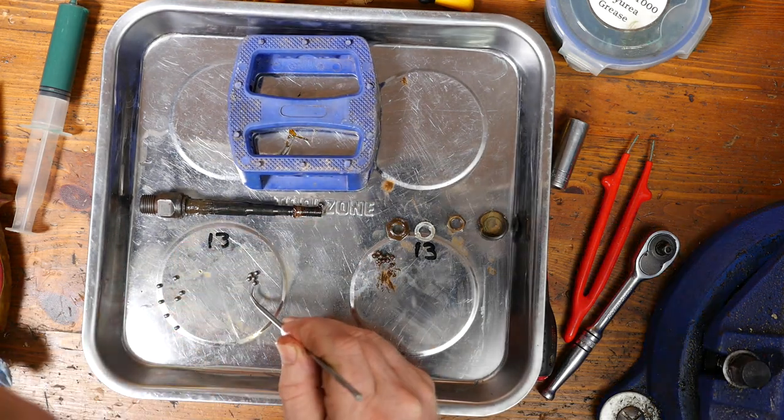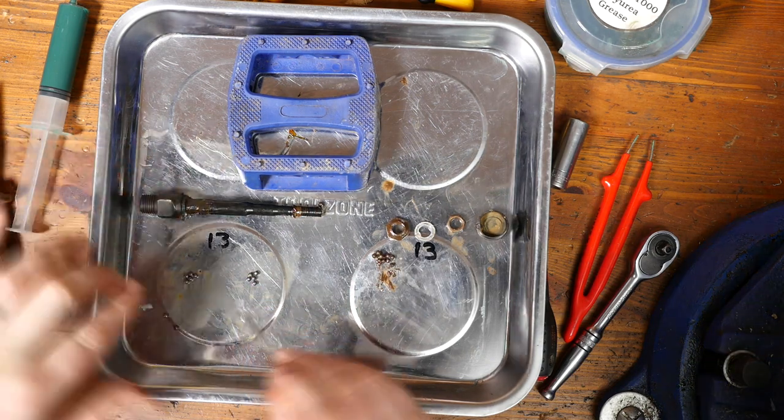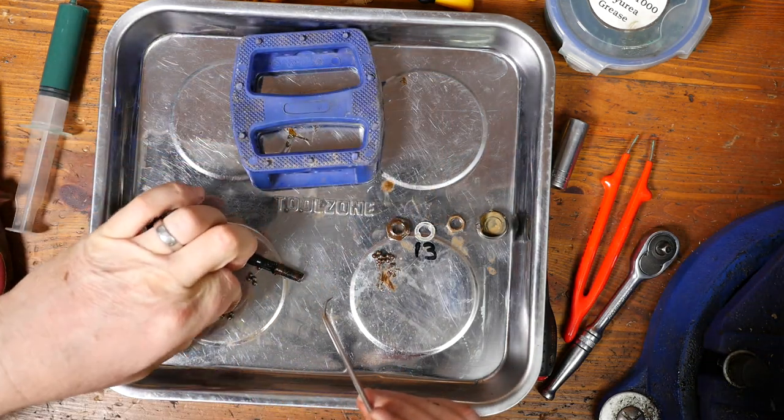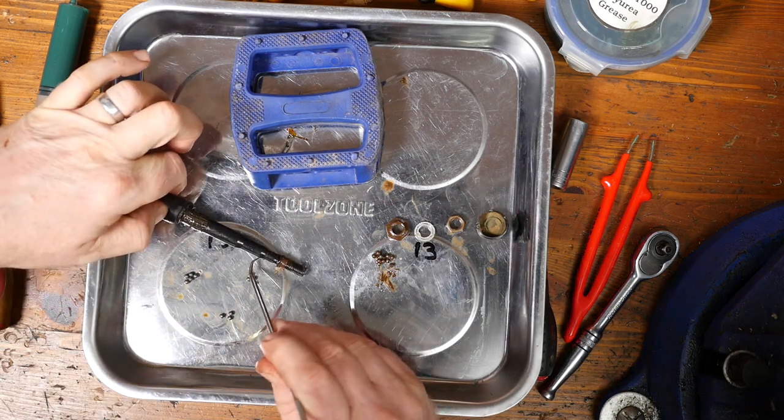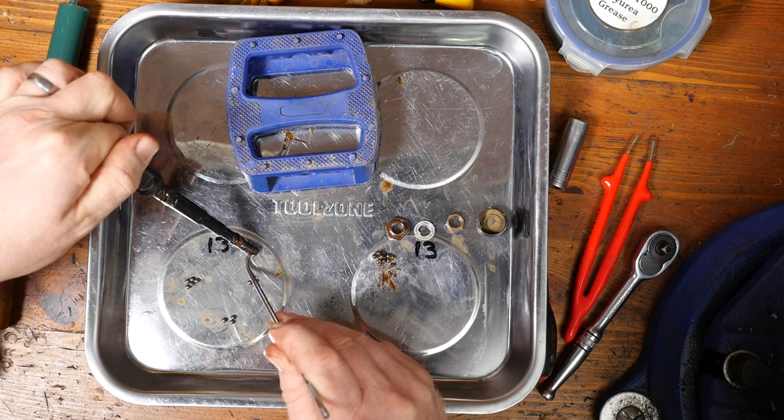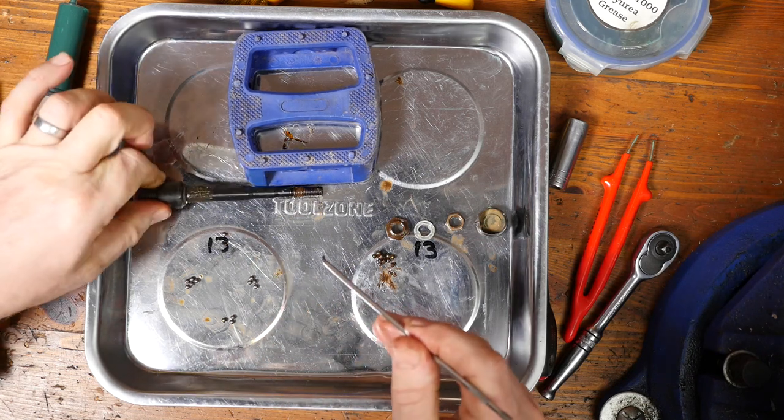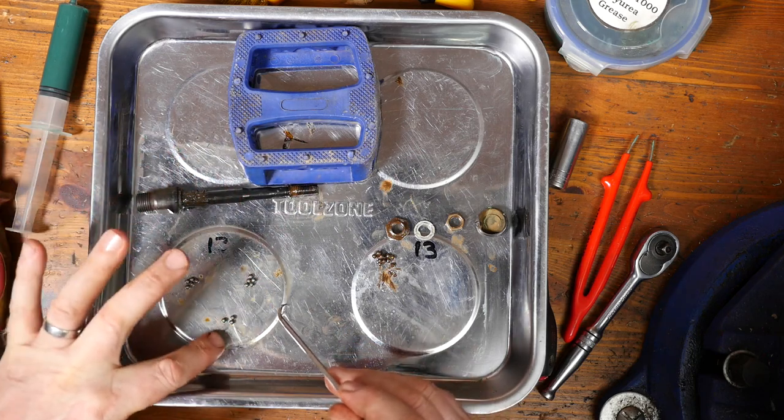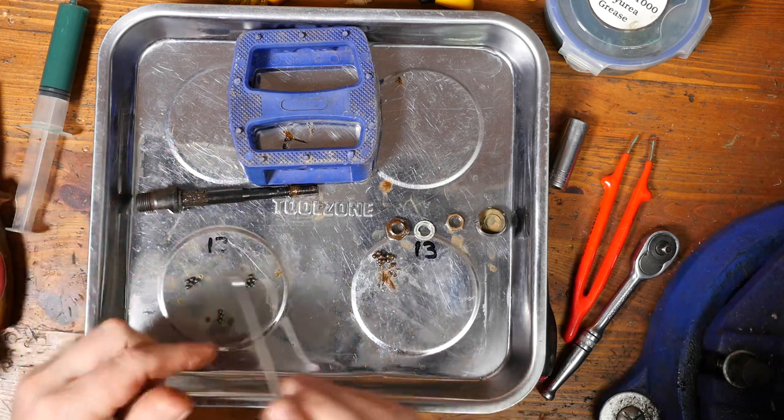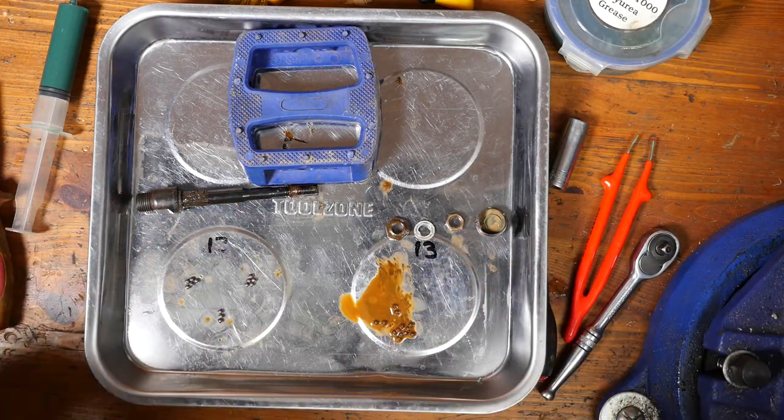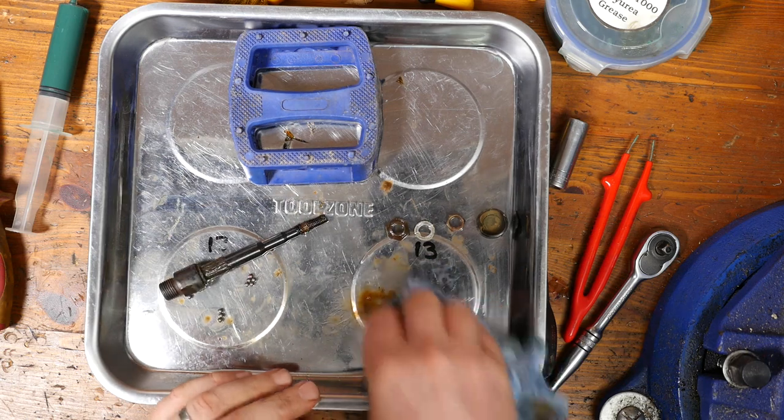The magnetic trays do have like a double edged sword - everything sticks to them. So some things you don't want to stick to the tray and they do stick to the tray. So I'll clean the bearings on the other side with a bit of paraffin.